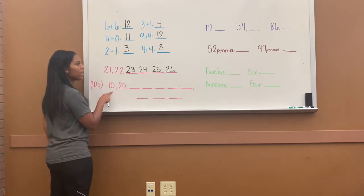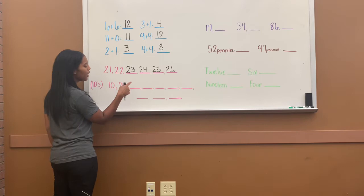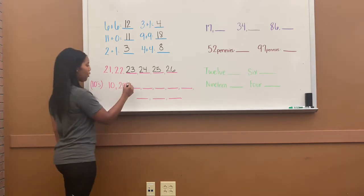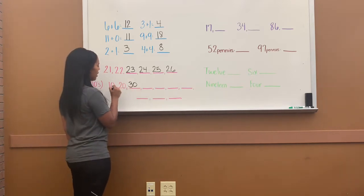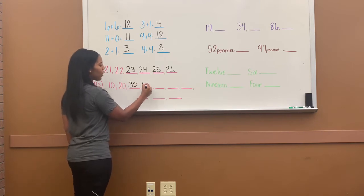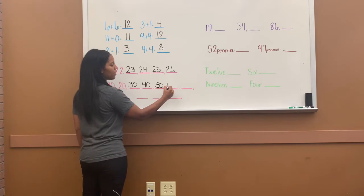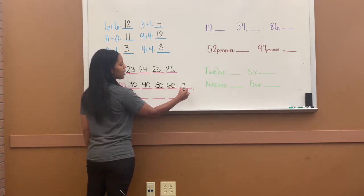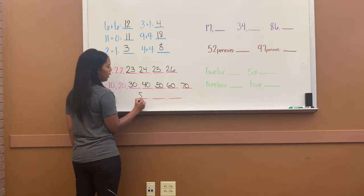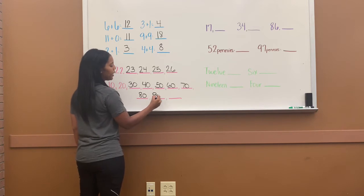So we have 10, 20. Do you know where I go from here? 30, 40, 50, 60, 70, 80, 90, and then I say 100.